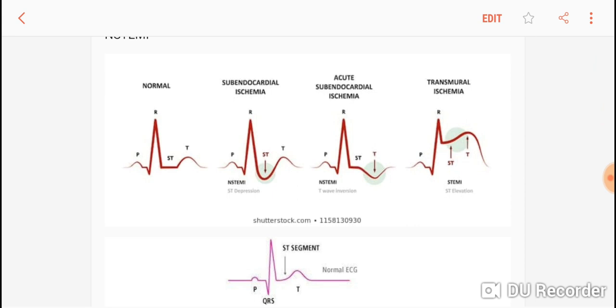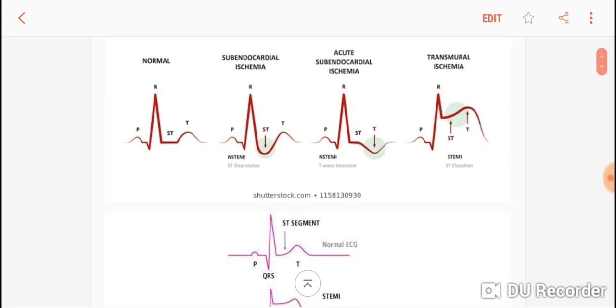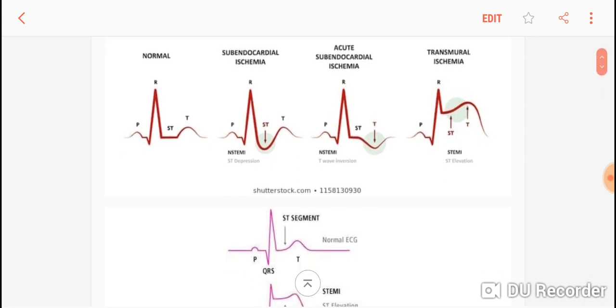In the third figure you see a T wave that is downwards, an ST segment that is normal. It can also be an NSTEMI. You can have ST depressions, you can have T wave inversions in NSTEMI.